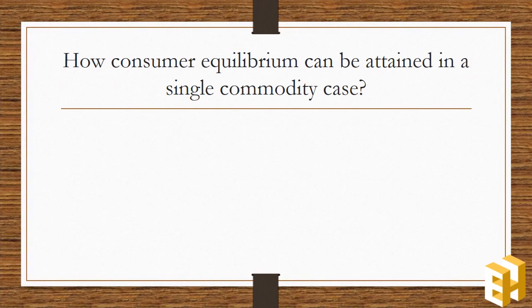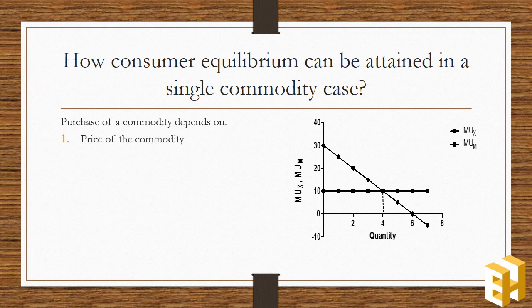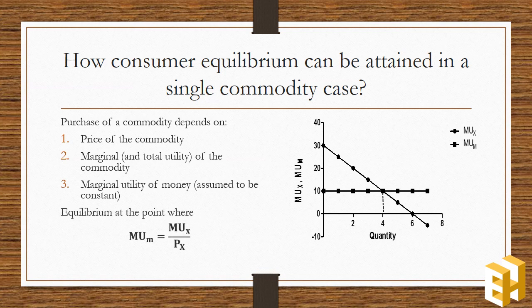Talking about consumer's equilibrium in case where a single commodity is considered, that is determined by the price of the commodity, marginal utility and total utility of the commodity, and marginal utility of money which is assumed as constant in this case. Equilibrium will be at the point where the ratio of marginal utility of a commodity to its price is equal to the marginal utility of money.